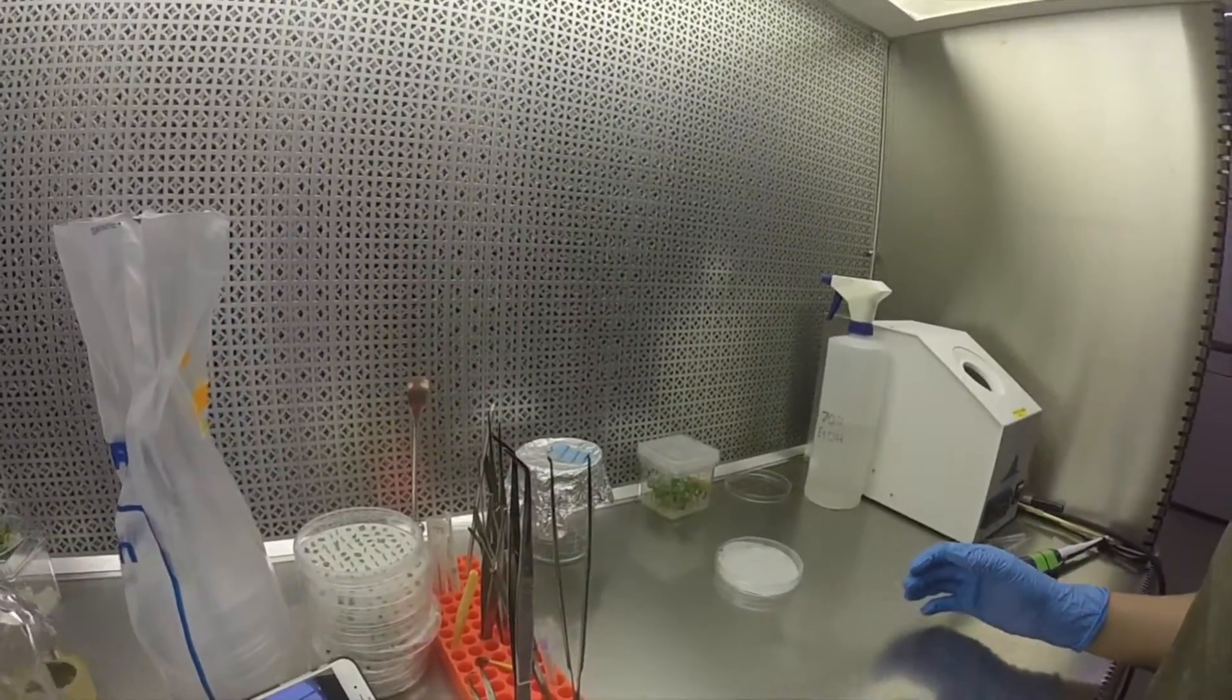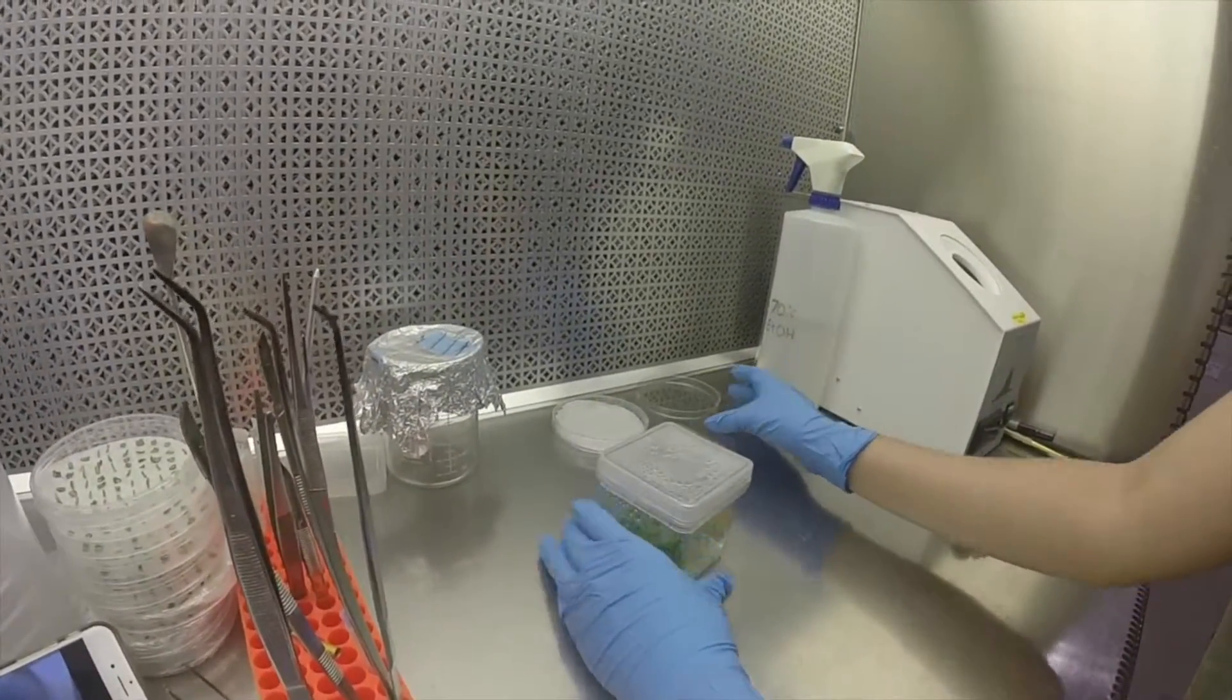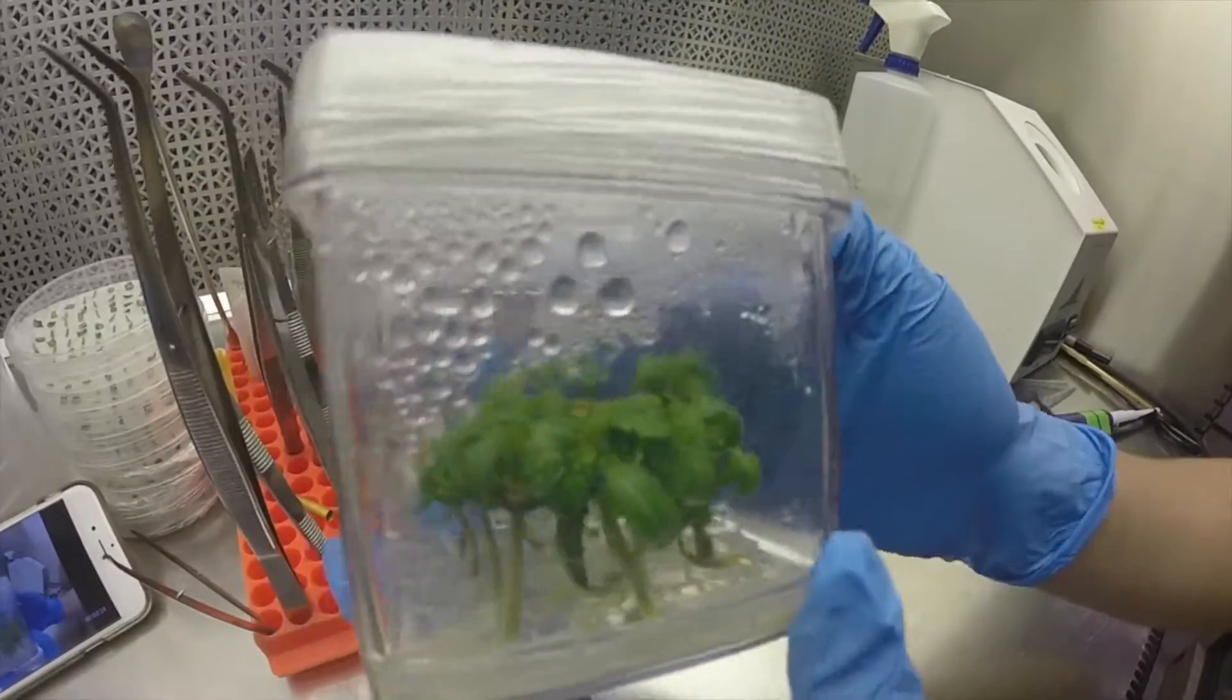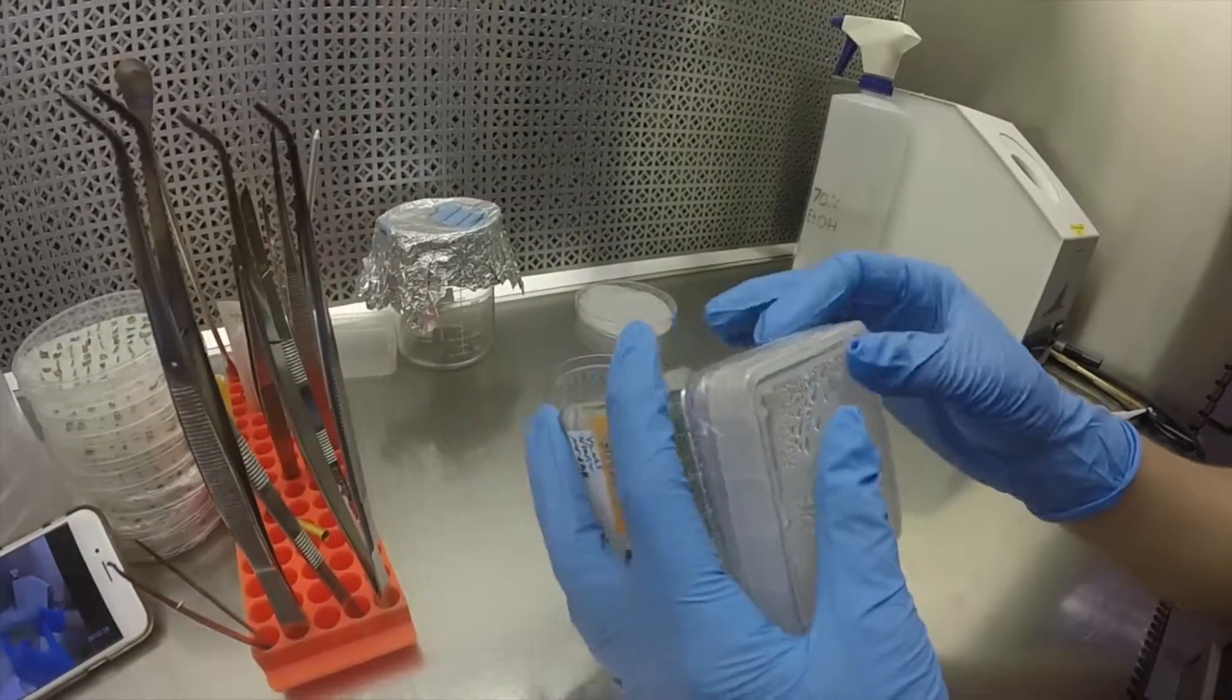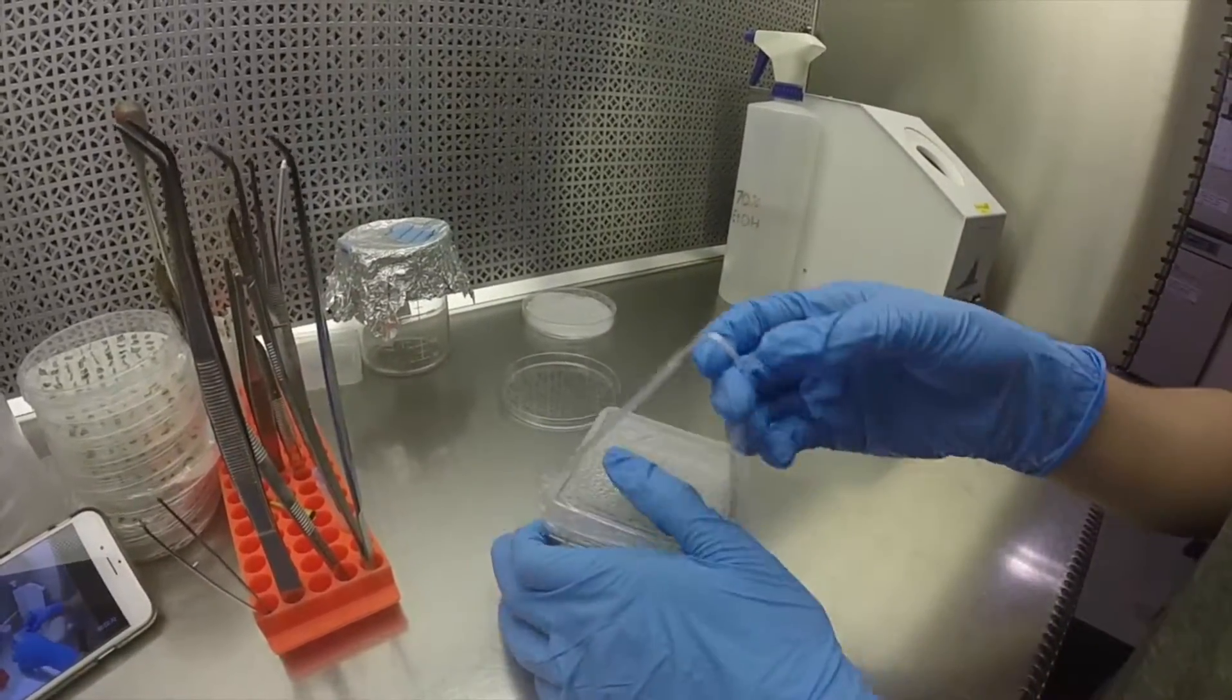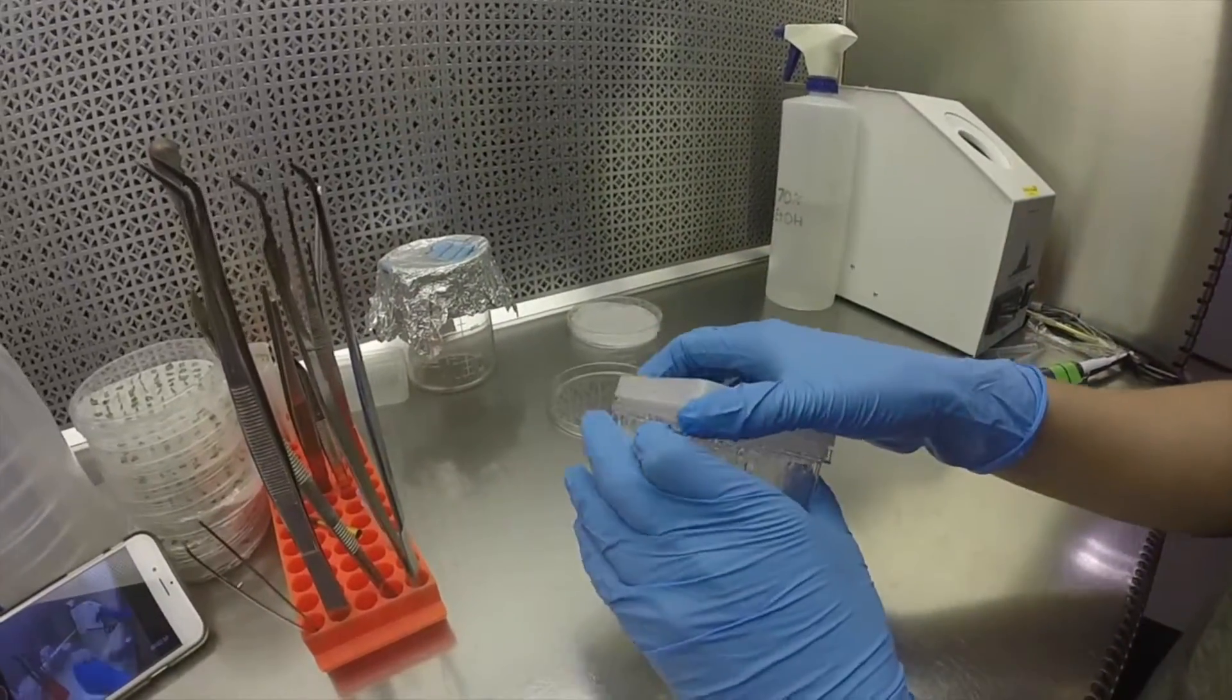Now we set all of those to the side and we're going to get into cutting. Here we have our tomato cotyledons. These are sterile tomato plants that have been growing for two weeks. They were sterilized via a procedure that I've also written up if anybody needs to look at that.